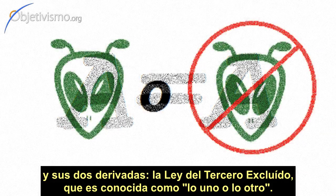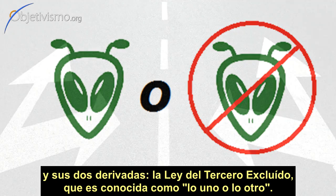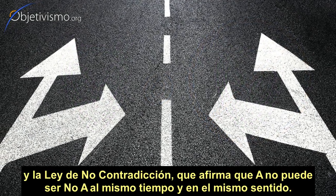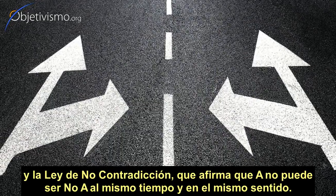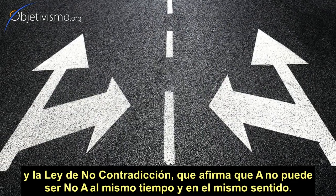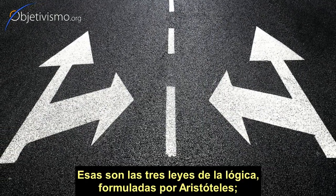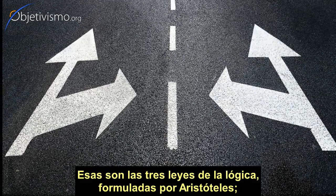The law of excluded middle, which is known as either/or. And the law of contradiction, which claims that A cannot be not-A at the same time in the same respect. Those are the three laws of logic formulated by Aristotle.